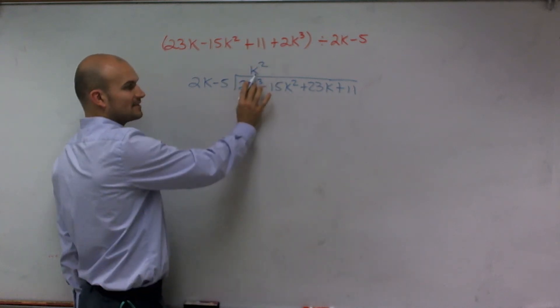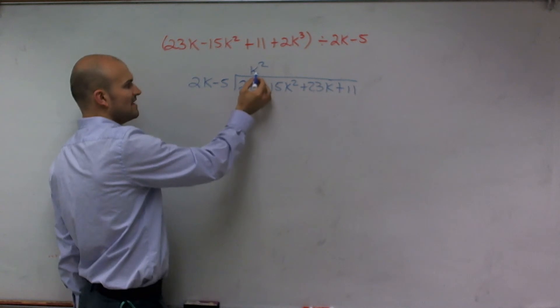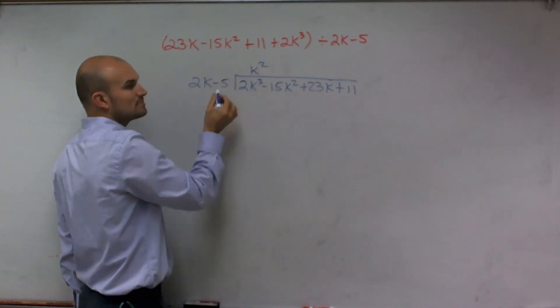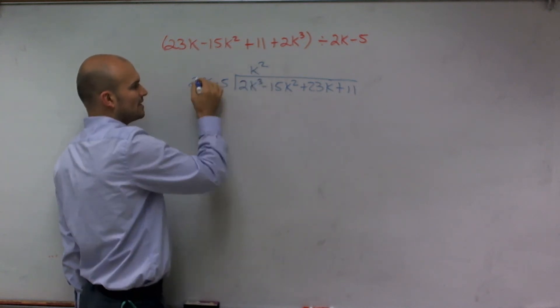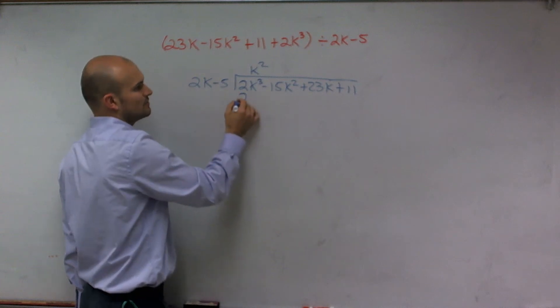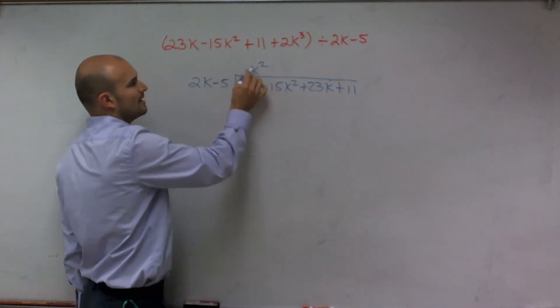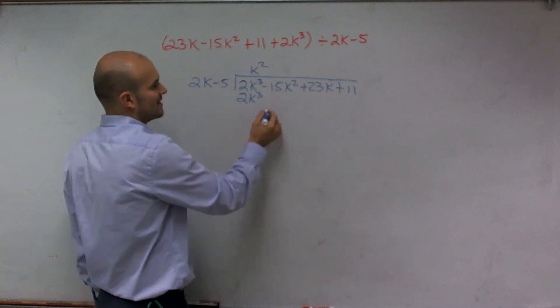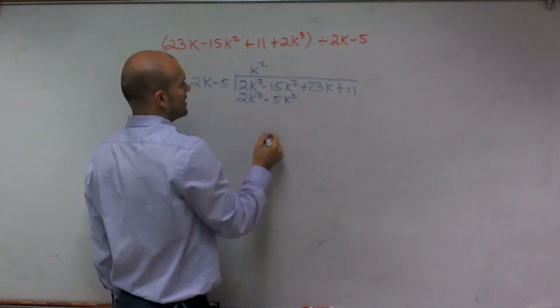Now I'm going to take this value and multiply it by both terms of my binomial. k squared times 2k is going to give you 2k cubed, and k squared times negative 5 is going to give you a negative 5k squared.